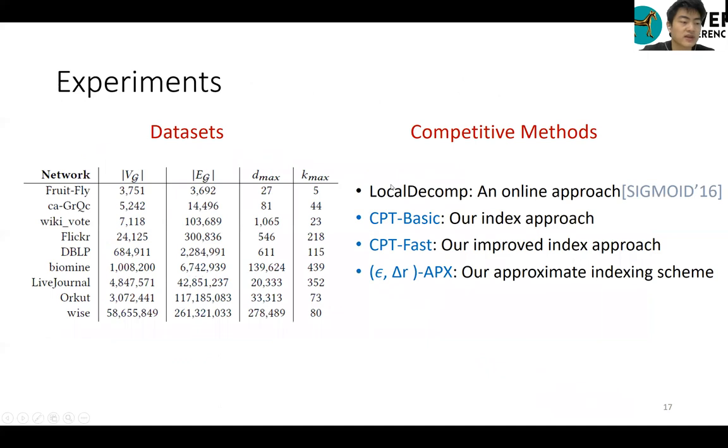Next, we introduce the experimental part. We evaluate and compare our three algorithms with one online algorithm. We use nine real datasets. The largest graphs contain more than 200 million edges.